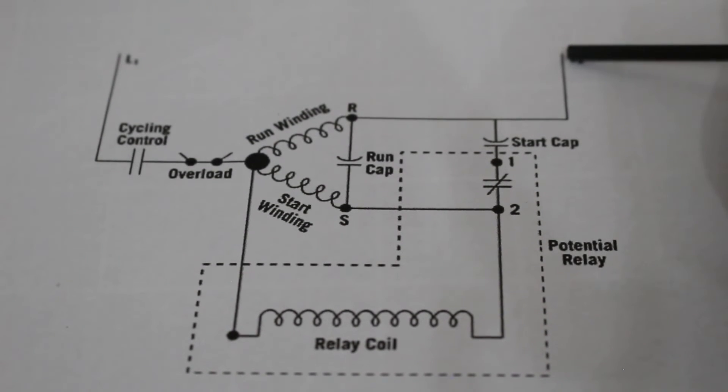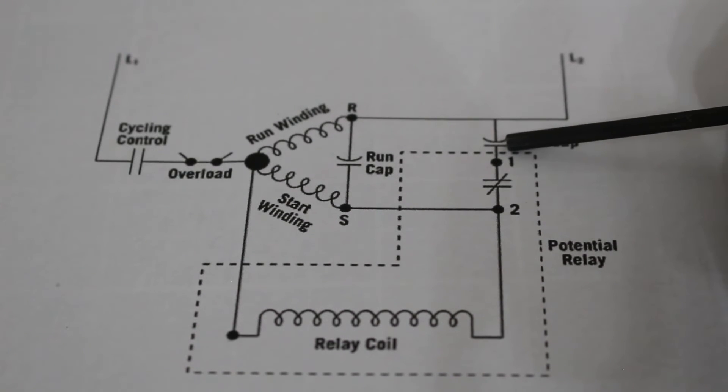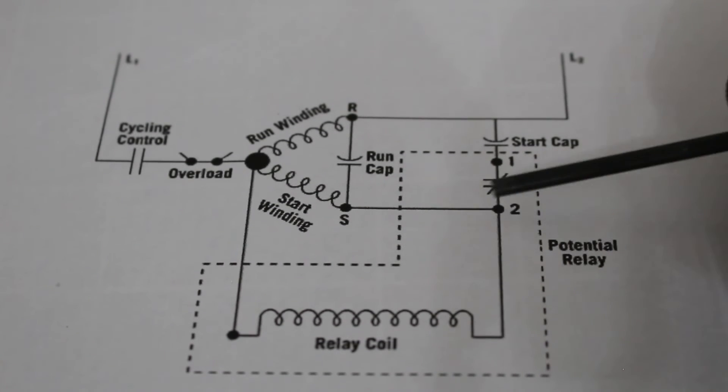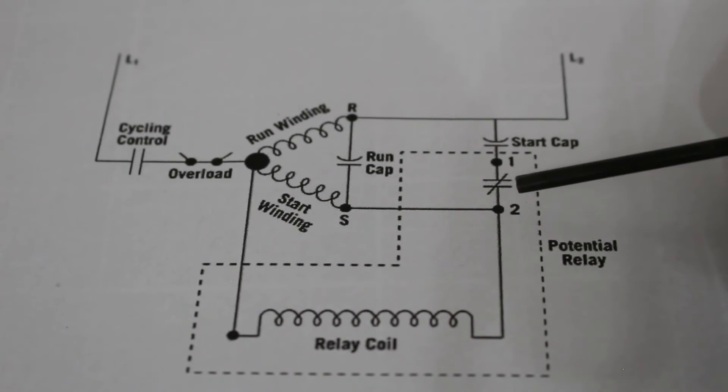So, the whole purpose is to flow electricity to the start cap, help us start. Once we started and reached a certain speed, we're going to get that back EMF. It's going to open these contacts, remove the start winding, excuse me, remove the start cap, and you just run from there.